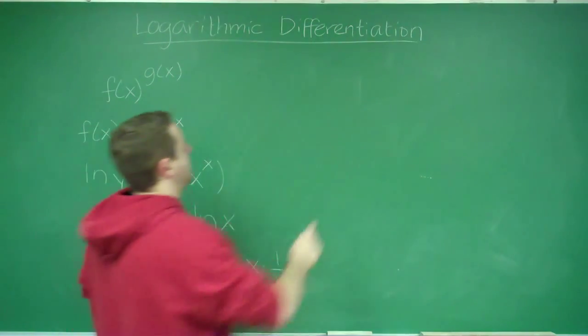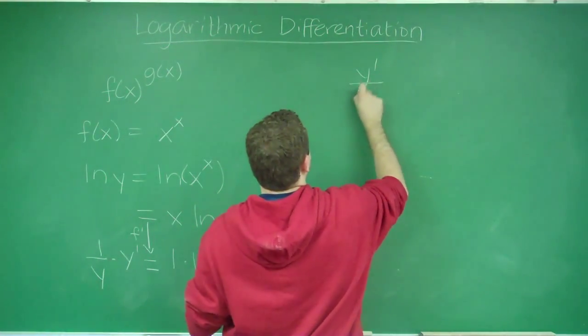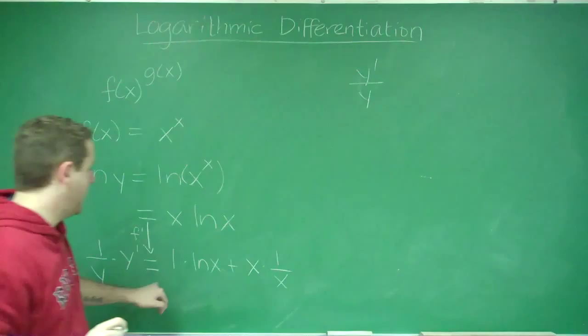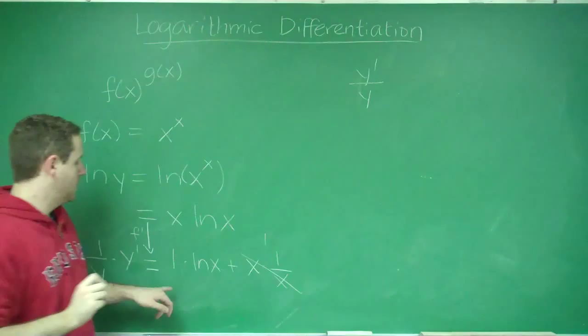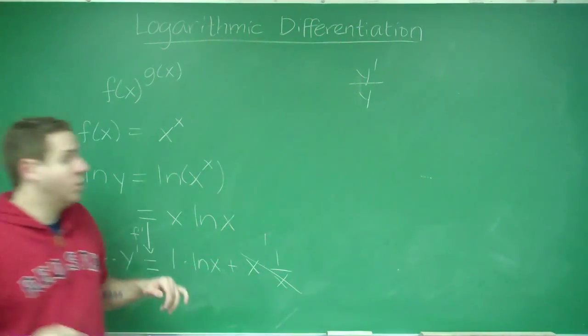So you can see on the left side now, we have y prime over y. On the right side, x times 1 over x is just 1. So we have ln x plus 1.